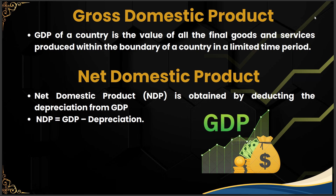Before getting into types of GDP, let's look at net domestic product (NDP). As mentioned in the earlier lecture on basic concepts of national income accounting, there is a term called depreciation — each product depreciates and a depreciation rate is calculated annually. Net domestic product is simply what you get when you subtract depreciation from GDP.